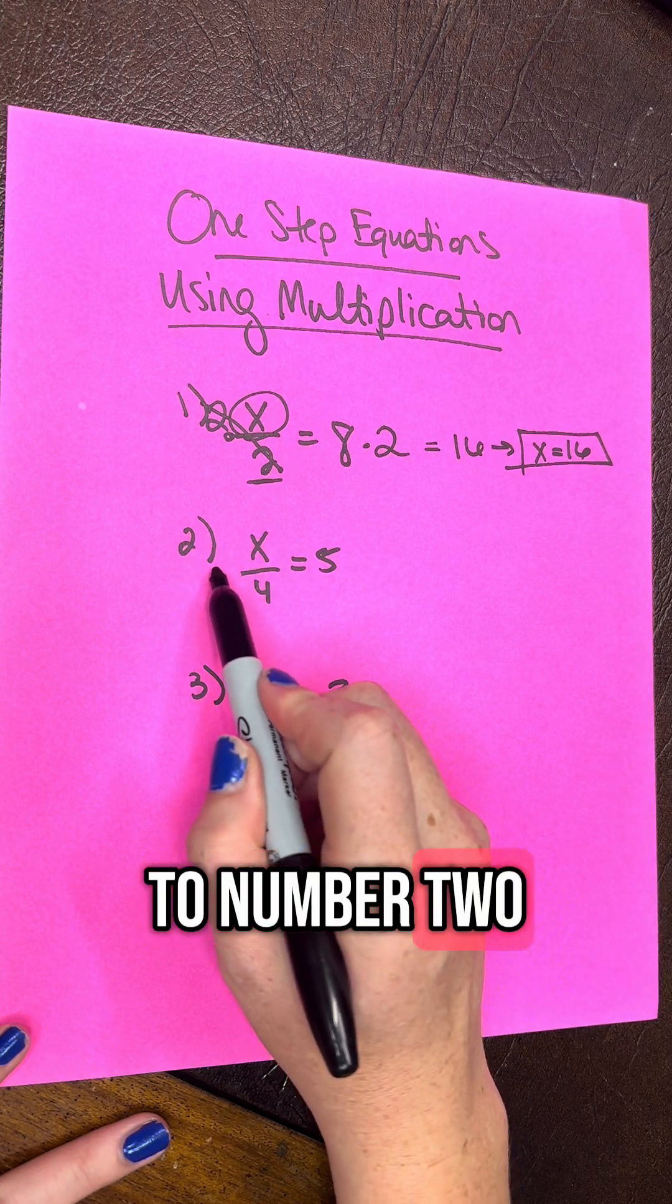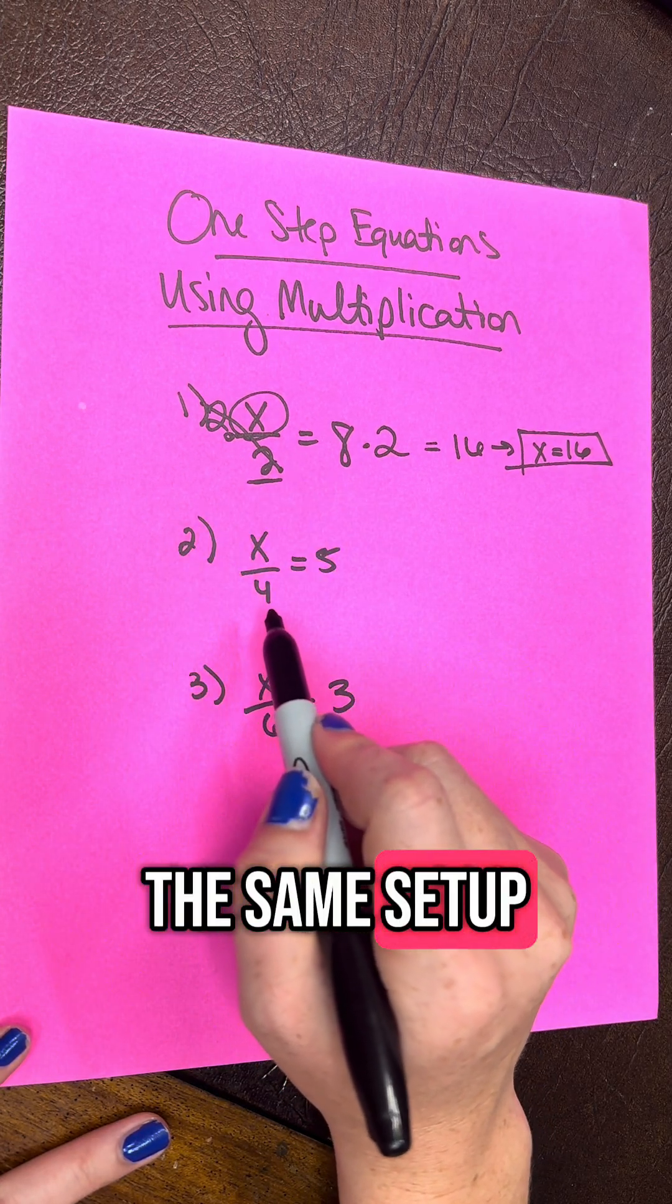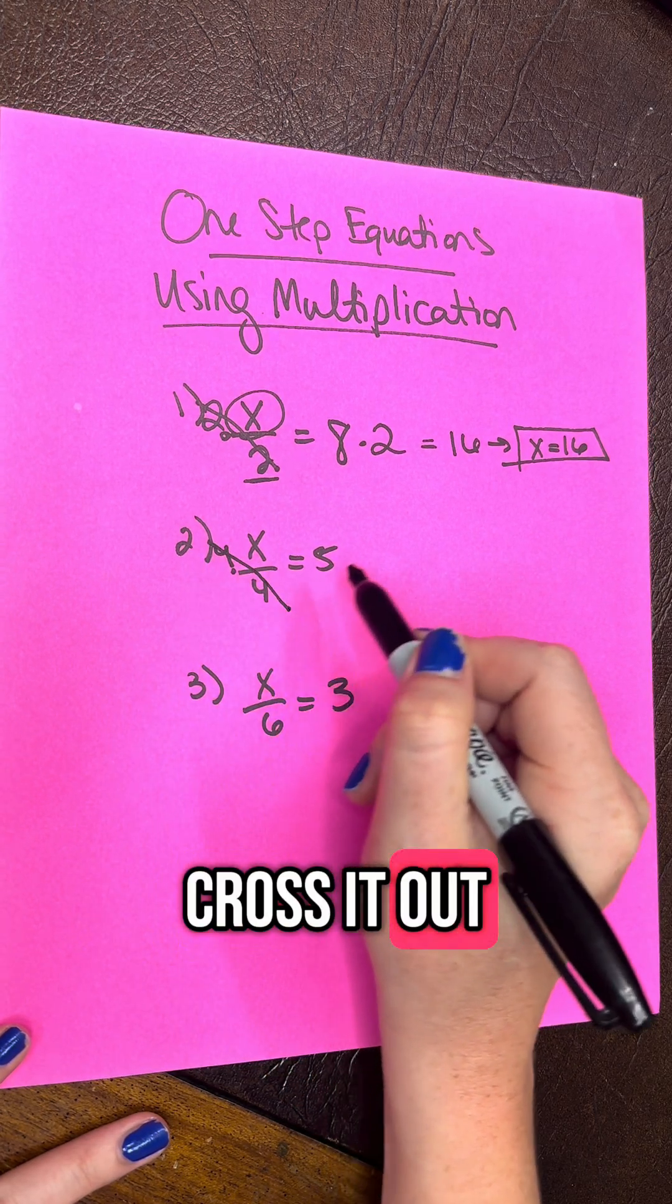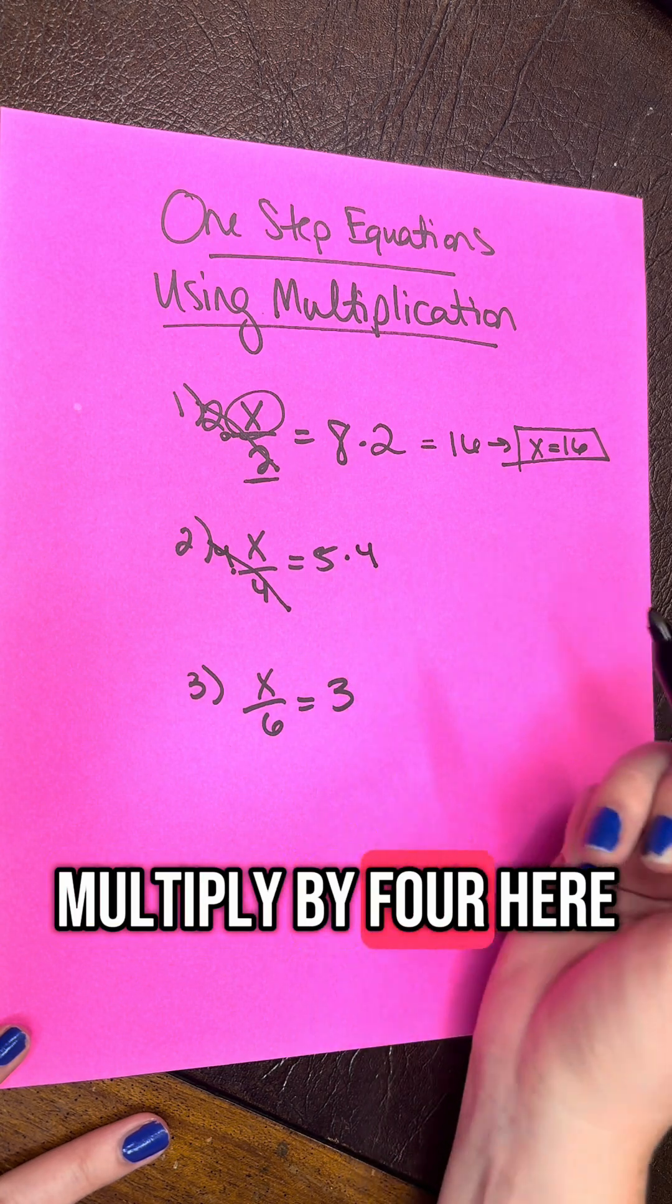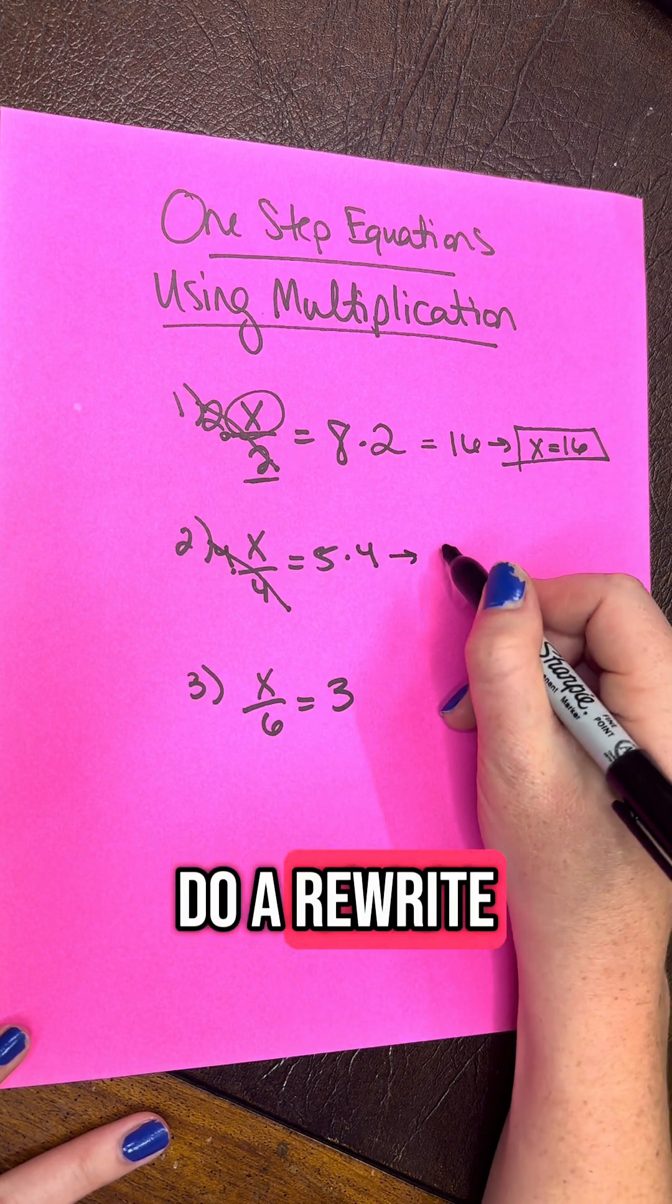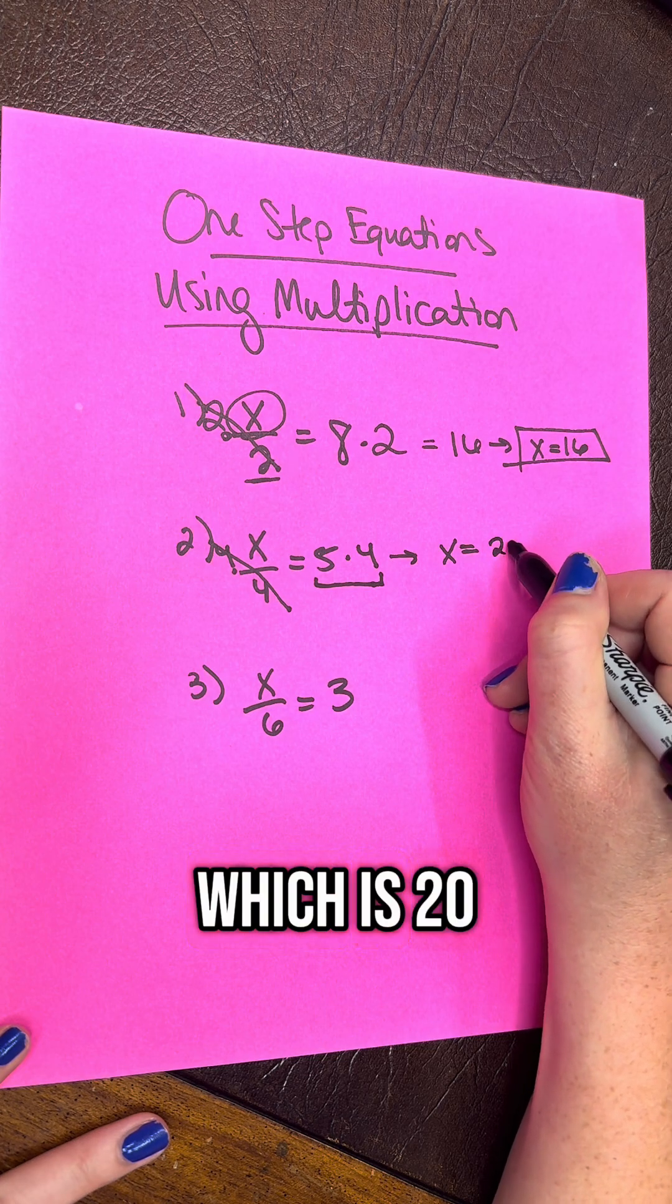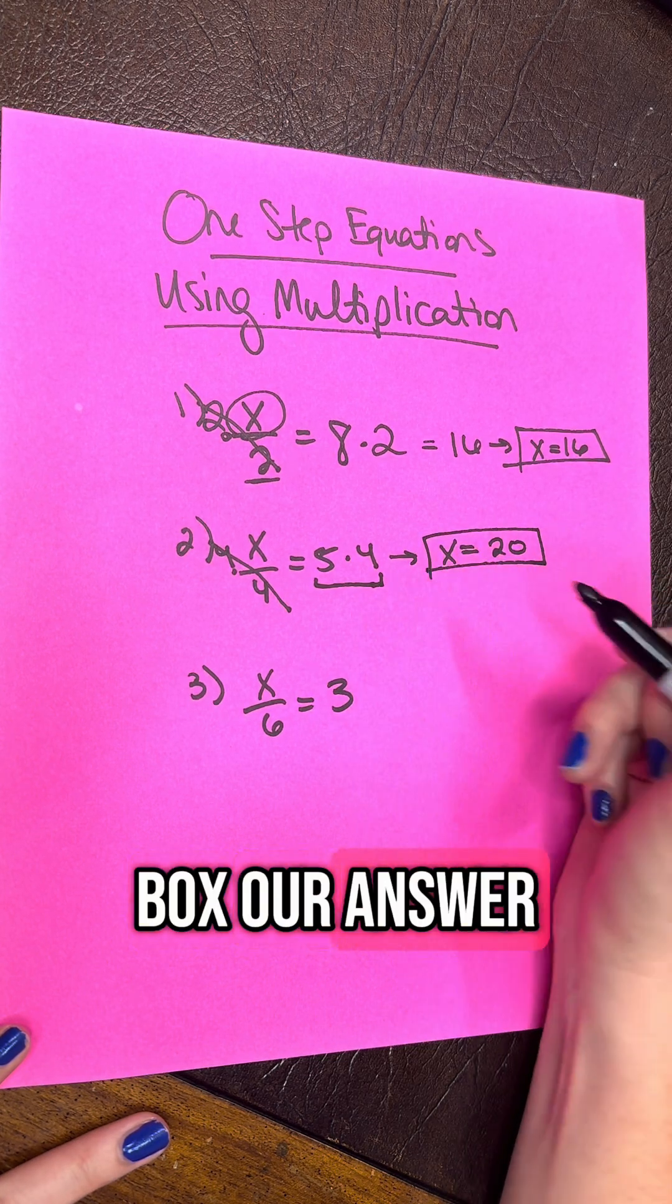Let's move on to number 2. So we have the same setup, but now we have a 4 on the bottom. So we need to multiply by 4, cross it out, multiply by 4 here, do a rewrite, x equals 5 times 4, which is 20, box our answer.